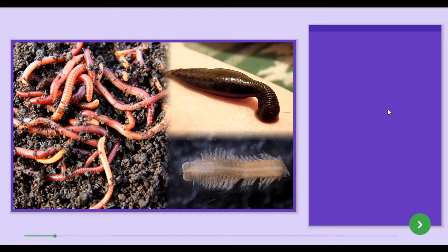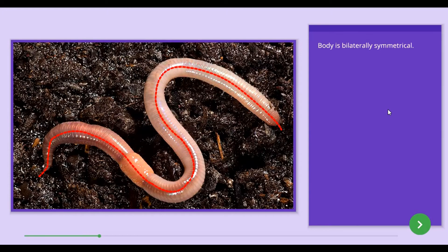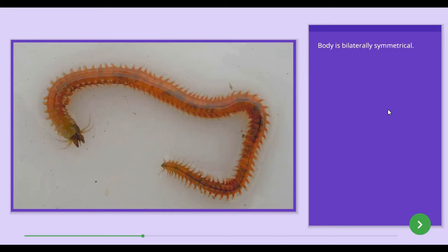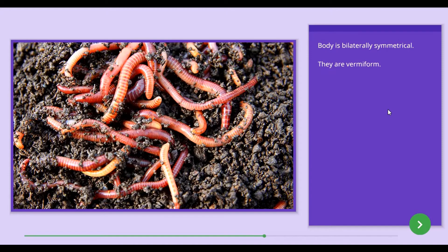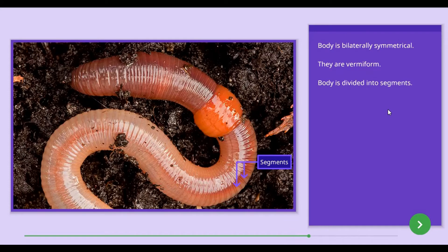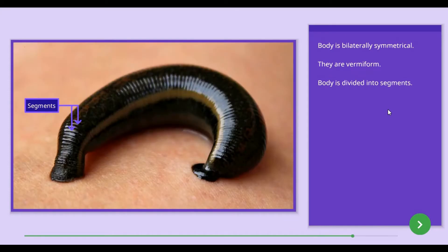The common features of animals in the Annelida group are as follows. The body of Annelids is bilaterally symmetrical, meaning the body can be divided into two similar halves along the central axis. Further, their body is vermiform. The body of Annelids is divided into segments, which is why animals of the Annelida group are known as segmented worms.